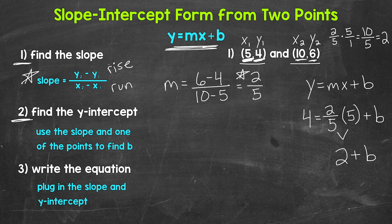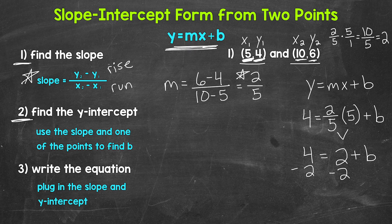So we have 2 plus b equals 4. Now we need to isolate b. We are adding 2 to b, so we do the opposite and subtract 2 from both sides. The 2s on the right cancel each other out, so b is isolated. b equals 4 minus 2, which gives us 2. So b equals 2 — that's our y-intercept. This line crosses the y-axis at 2, at the point (0, 2).